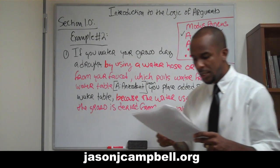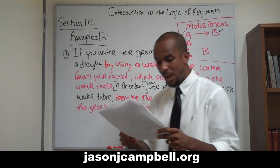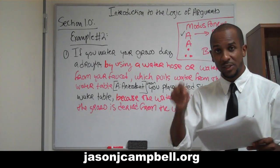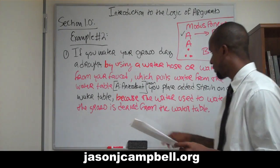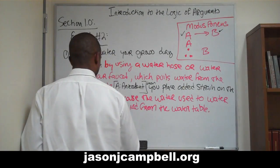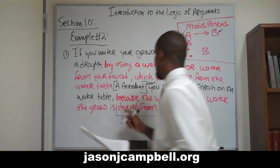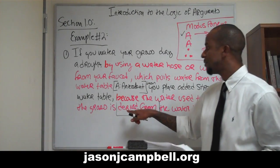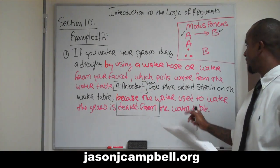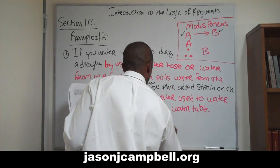The water used to water the grass is derived from the water table. This is the justification — 'derived from' is really important here. This being derived from is, in my consequence — and I forgot to put this up here — this is my conclusion.